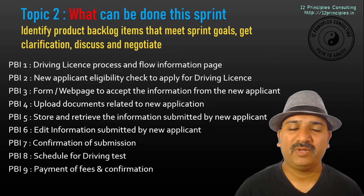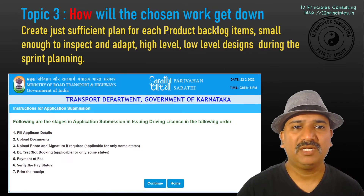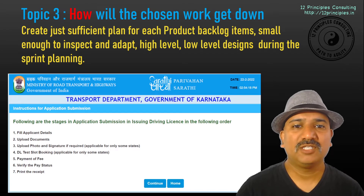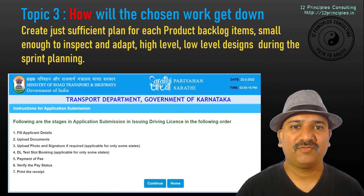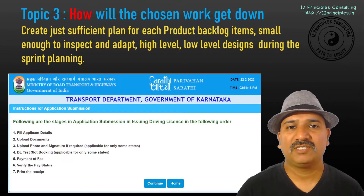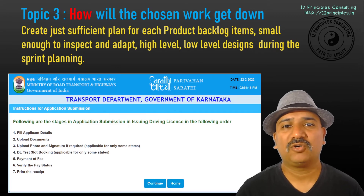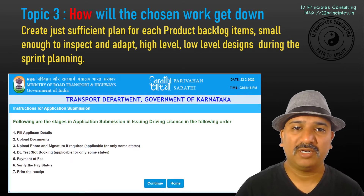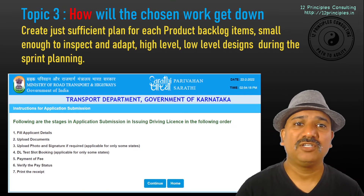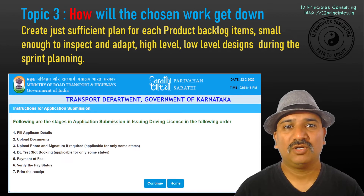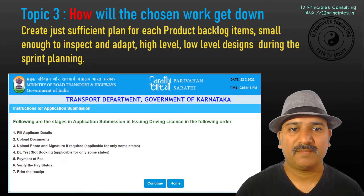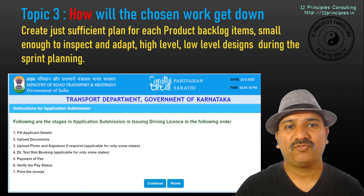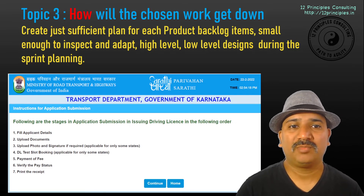That brings us to topic three: team members creating just a sufficient plan for each of the Product Backlog items so that they can inspect and adapt during the Sprint. This plan could include task-level information, high-level design, definition of done, low-level design thinking, and test scenarios — any information that would help the team plan well. Topic three, how will the work get done, can be revisited multiple times during the Sprint by the developers. The Sprint Backlog also evolves over time during the Sprint with just sufficient planning, and the daily Scrum — inspecting and adapting on a daily basis — helps the team come up with a better plan through to the end of the Sprint.